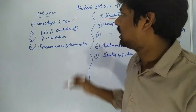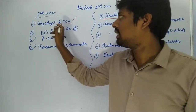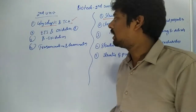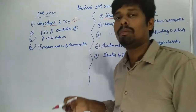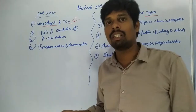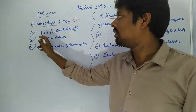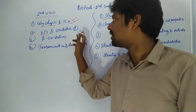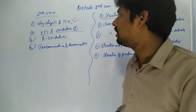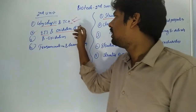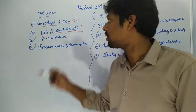The fifth important question is glycolysis and the TCA cycle. The second question is the electron transport system and oxidative phosphorylation — the electron transport system relates to the mitochondria, and oxidative phosphorylation relates to ATP production.